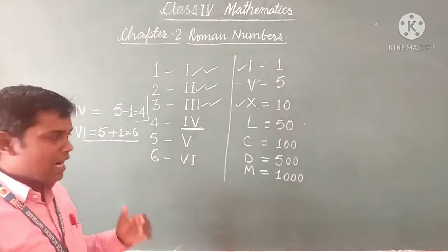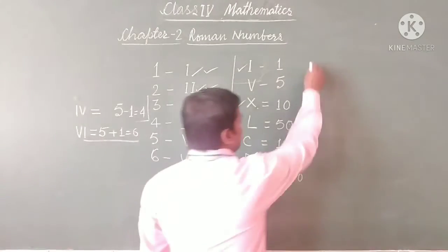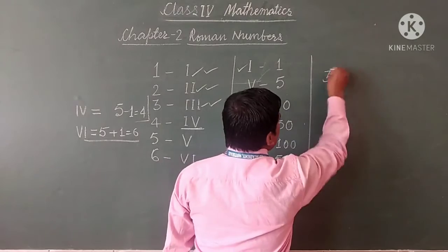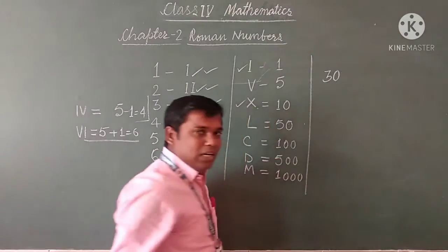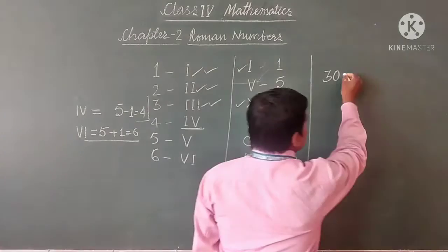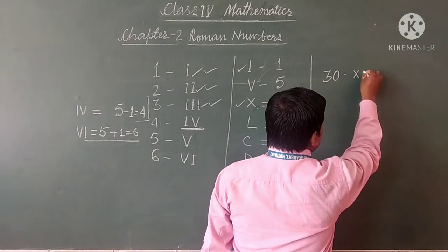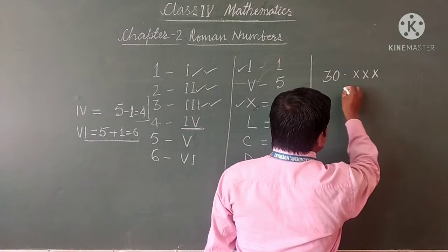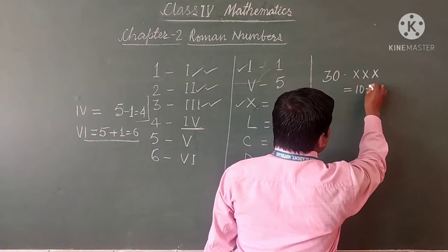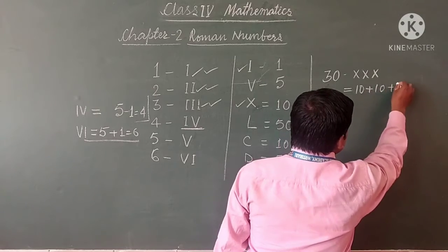If before a larger symbol, we subtract; if after, we add. And if we have to write 30 in Roman numbers, we write X three times — that means 10 plus 10 plus 10, which equals 30.